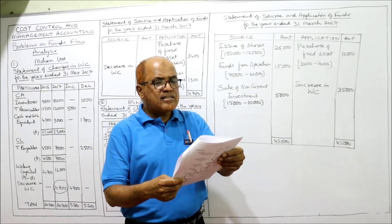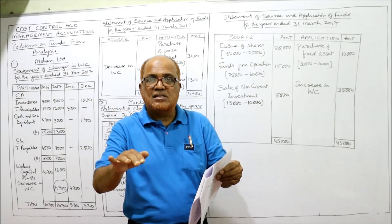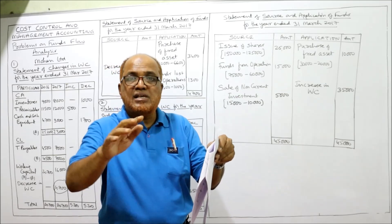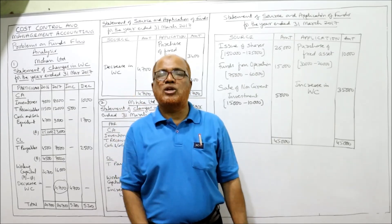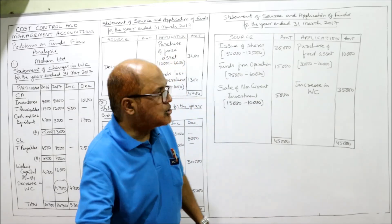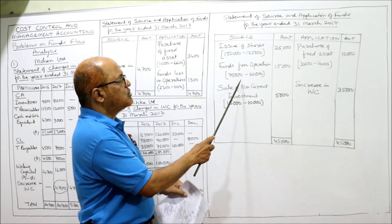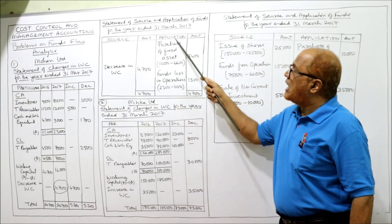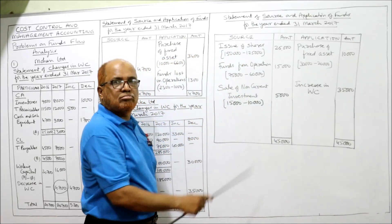Next item: reserves and surplus. Last year 60,000, current year 75,000 — reserves and surplus have increased. So funds from operations — funds generated in operation, it is a source. 75,000 minus 60,000 equals 15,000. Contrast this with the last problem where reserves decreased and we had funds lost in operation on the application side.